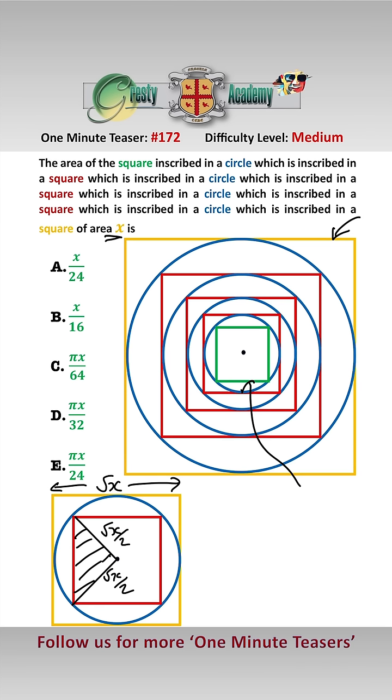And let's look at the area of this triangle here. Well that will be equal to base, which is root x over 2, times perpendicular height, which is root x over 2, over 2. And that equals x over 8.